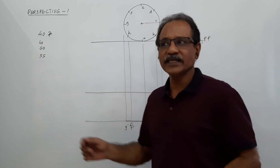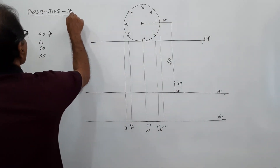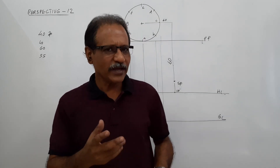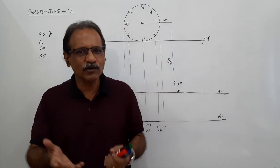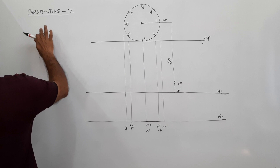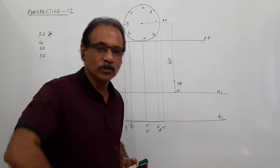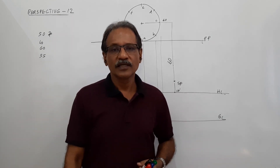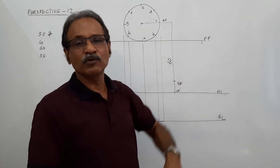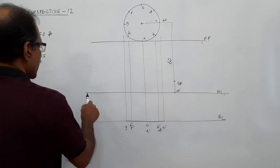Hi students, welcome to Engineering Graphics. This is question number 12 in perspective projection — a very frequent question in almost all universities. It involves a circular lamina of 50 mm diameter lying on the ground touching the picture plane. The station point is 60 mm in front of VP, the center plane is 40 mm to the right of the center of the lamina, and the station point is 55 mm above the ground.